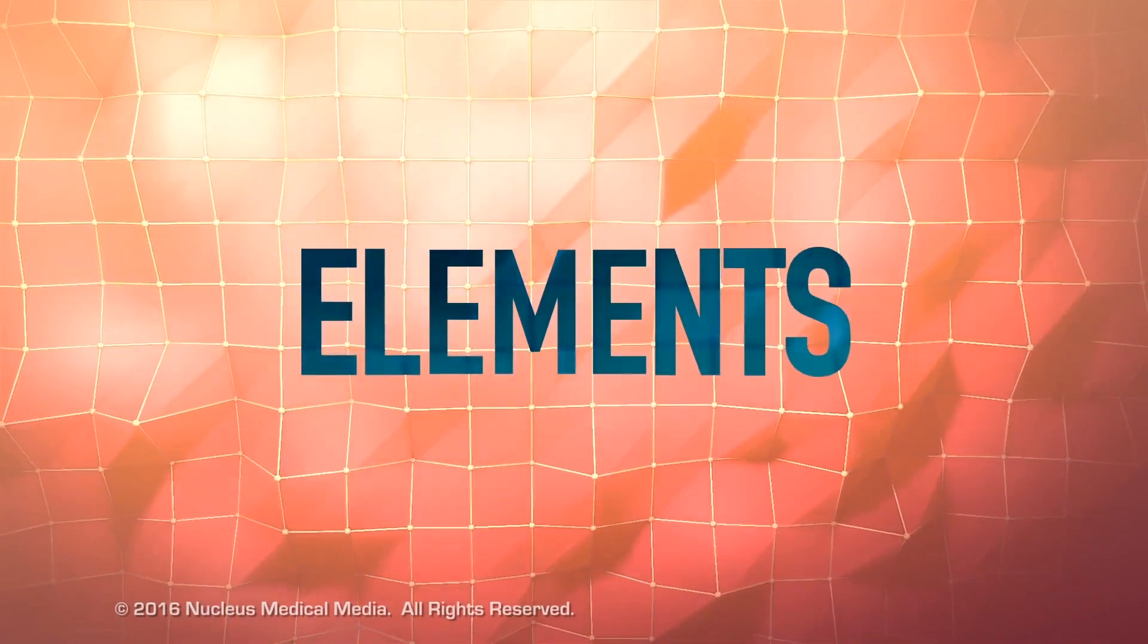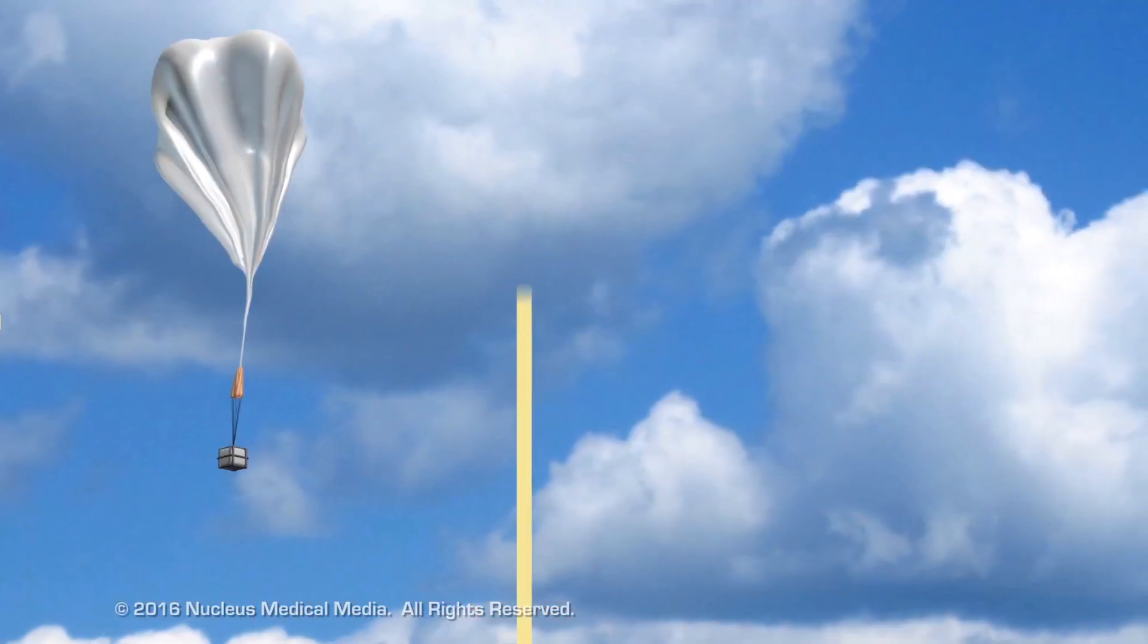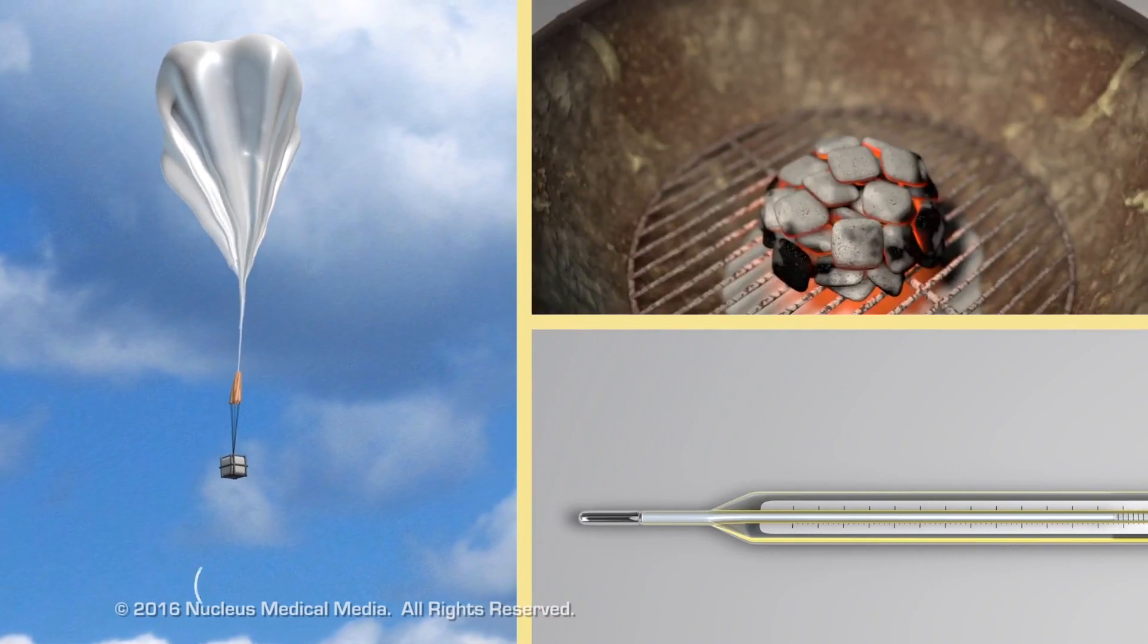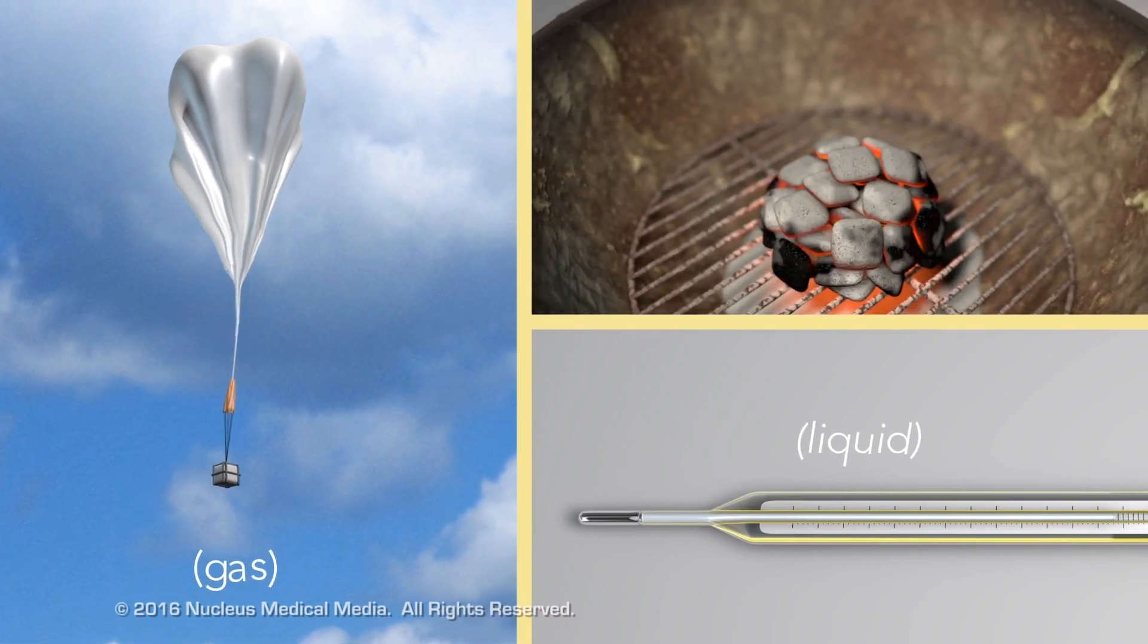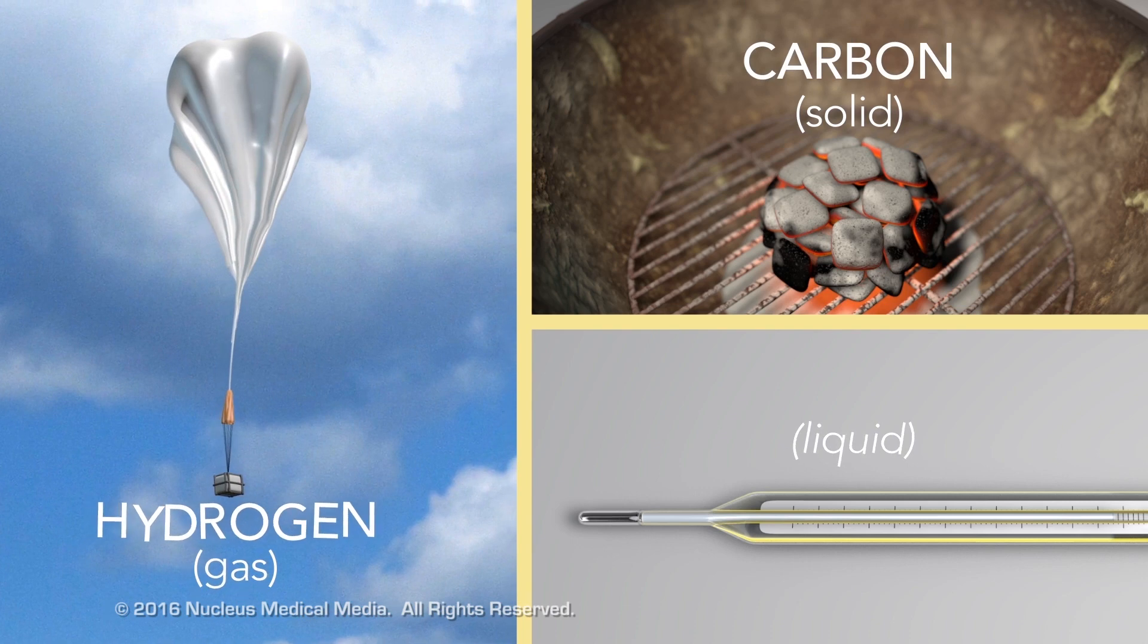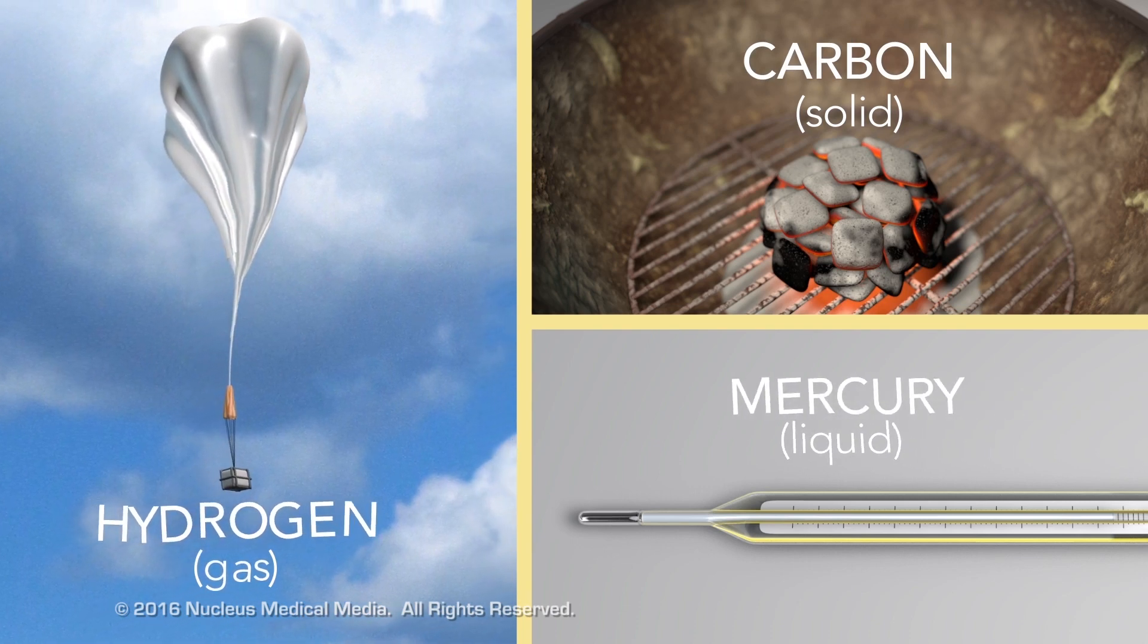What is an element? Elements are pure substances that are made up of only one type of atom, such as hydrogen, carbon, or mercury.